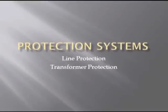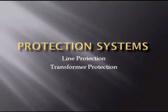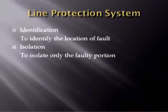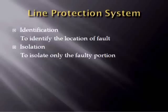This presentation is about the protection systems of electrical power systems. We will discuss two portions of protection systems: line protection and transformer protection. The main function of the line protection system is to identify the location of faults and isolate only the faulted section. The key challenge to transmission line protection lies in reliably detecting and isolating faults without compromising the security of the system.